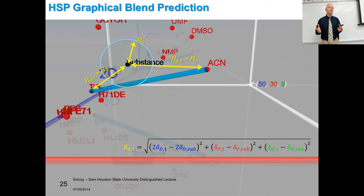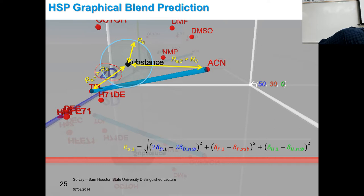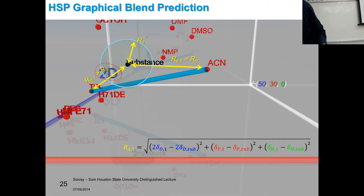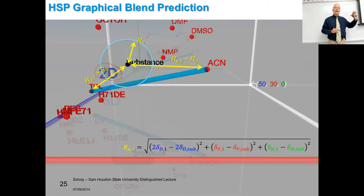One thing peculiar about Hansen solubility parameters: the dispersion axis seems to be twice as important as the others — so there's a factor of two in front of the d term. In the 3D plot, the interaction zone is plotted with 2d on the d-axis. This makes the interaction zone a sphere. Without this correction, the sphere would be squished in the d direction — shaped like a jelly donut.